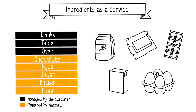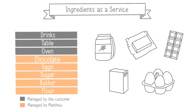However, the client needs to have an oven to bake these ingredients into cookies, find a table to eat them, and beverages to accompany the cookies. This model is intended for cooking enthusiasts as it allows clients to focus on cooking delicious homemade cookies without worrying about shopping for ingredients.